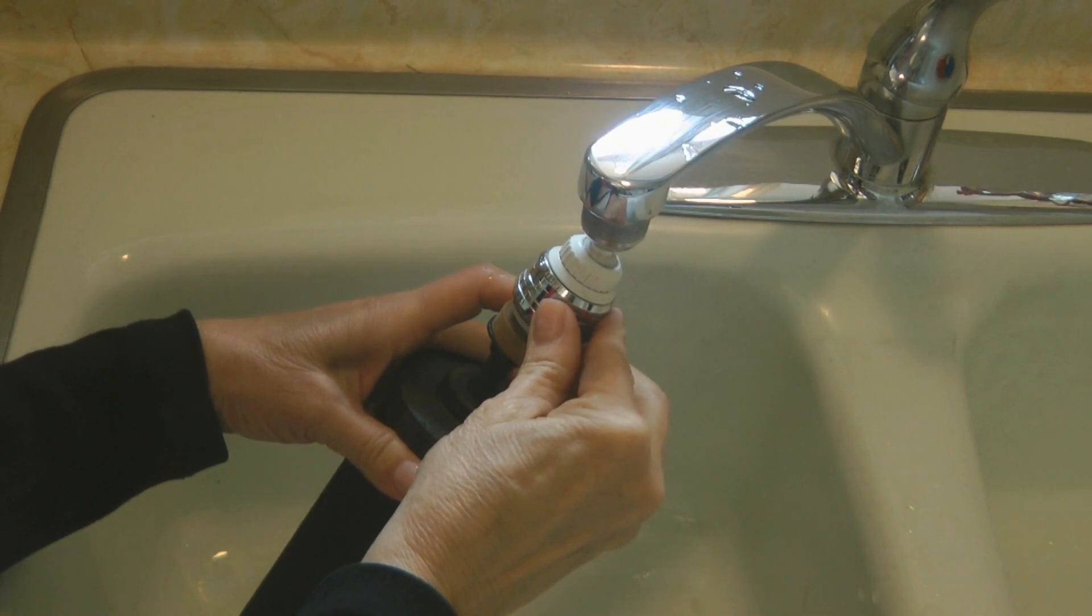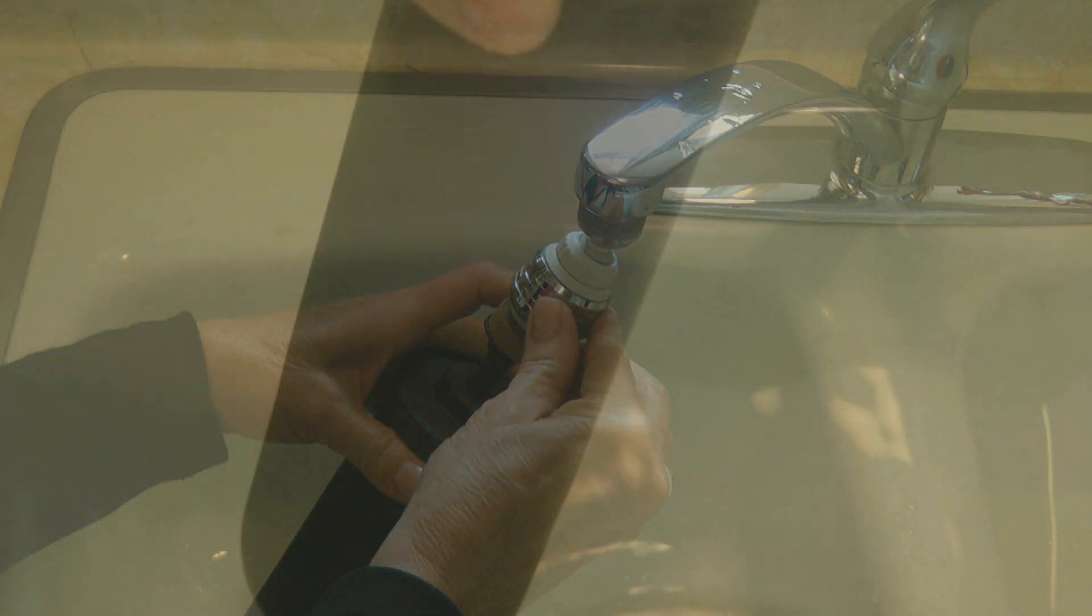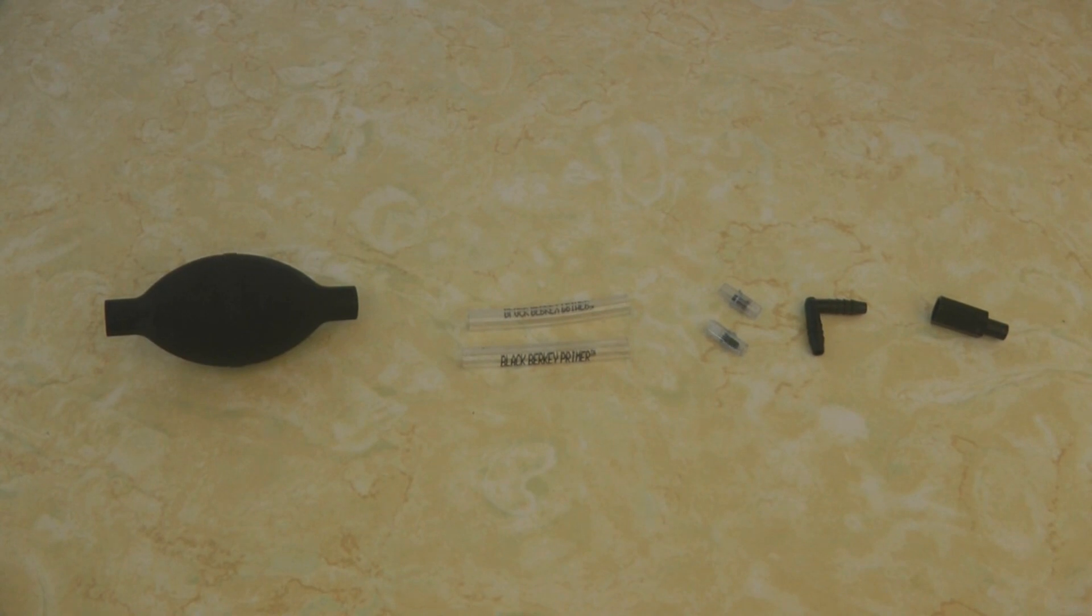You can buy a primer for your black Berkey filter. It works great when there's no water pressure or if you live off grid. The black Berkey primer pulls the air out rather than pushes the water in, and allows you to pump to get the flow going in your Berkey filter.